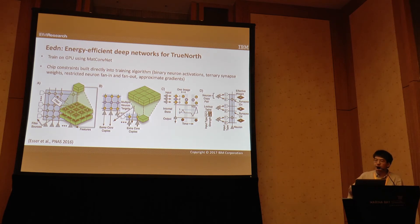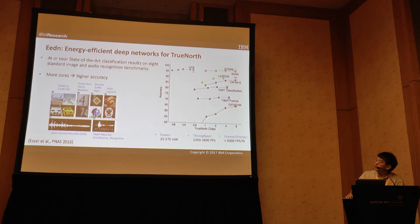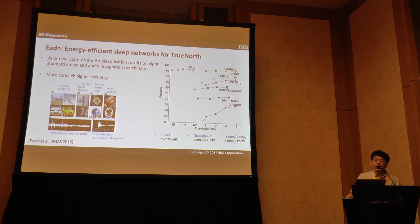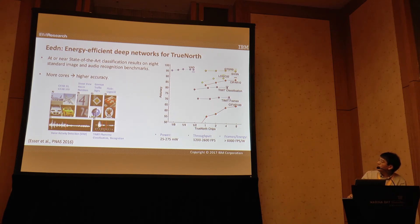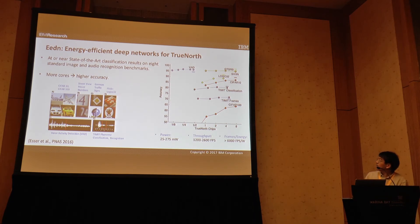You can read about our approach in our PNAS paper from last year. The good news is that with these tricks, even with constraints built in, you can still achieve at or near state-of-the-art classification on standard benchmark datasets — CIFAR, CIFAR-100, Street View House Numbers, and a couple of audio datasets. If you throw enough cores and neurons at it, you do start asymptotically approaching state-of-the-art. The question is how much hardware you're willing to spend: the bottom axis shows the number of TrueNorth chips you'd need to get the accuracy shown on the y-axis.